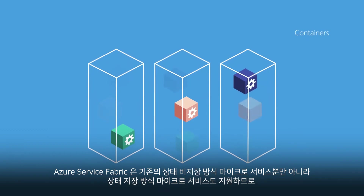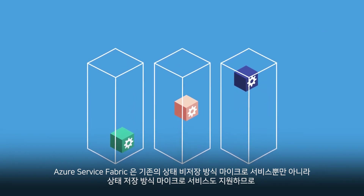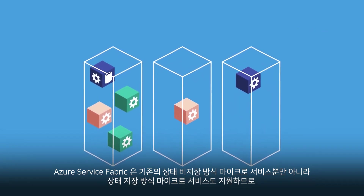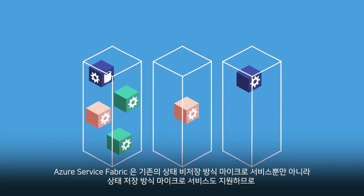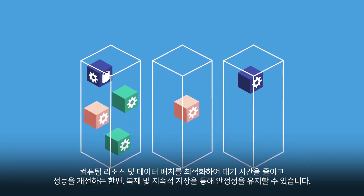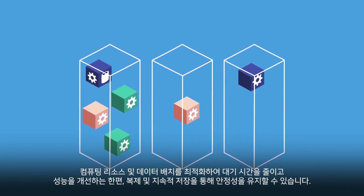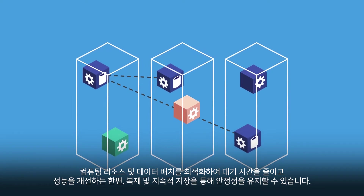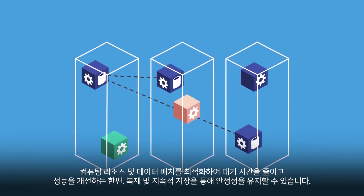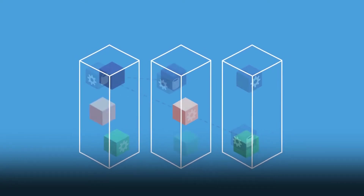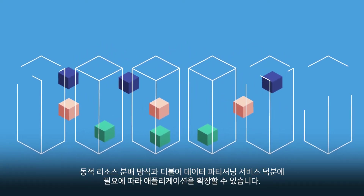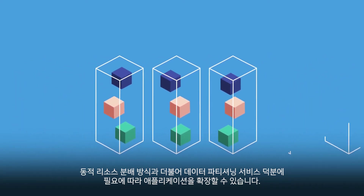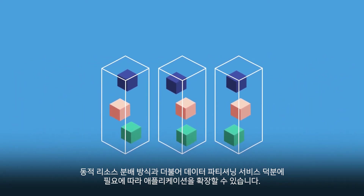In addition to supporting traditional stateless microservices, Azure Service Fabric supports stateful microservices, co-locating compute and data to reduce latency and enhance performance while providing reliability through replication and persistence. Data partitioning services along with dynamic resource balancing makes scaling on demand routine.